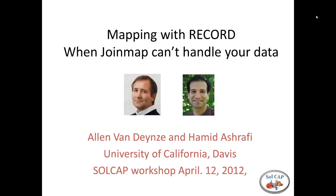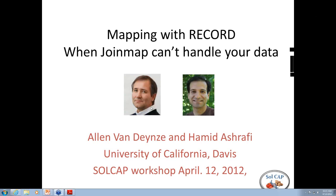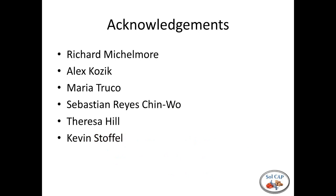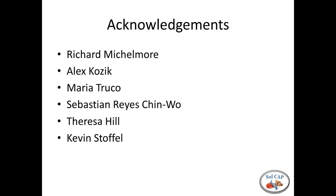So my talk today is going to be about mapping a lot of markers, which has been a large challenge, at least in our lab, when we're designing high-density genetic maps. We've adopted a strategy developed in the Mitchell Moore lab here at UC Davis. Dr. Richard Mitchell Moore works on lettuce and genomics. Alex Kozik has developed a number of scripts, along with advice from Maria Trucco, Sebastian, Teresa Hill, Kevin Stoffel, and myself. We've implemented these in both lettuce and pepper to develop high-density genetic maps.